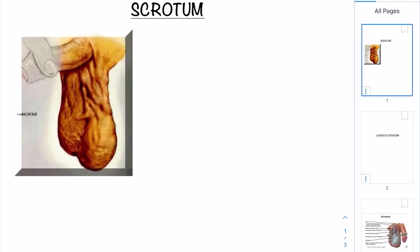Hello guys, welcome to our channel Dr. Mucus. Today we are going to see about an important male reproductive part — one of the male's external genitalia: the scrotum. There are two types of male external genitalia, which are the external parts of the male reproductive system. One is the penis, which I'll cover in another video. In this video we are mainly going to focus on the scrotum.